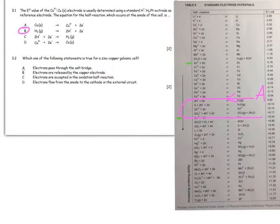Which of the following statements is true for a zinc-copper galvanic cell? Zinc releases electrons, copper receives electrons. Electrons are released by the oxidation half reaction. Electrons flow from the anode to the cathode in the external circuit—that is true.